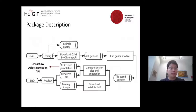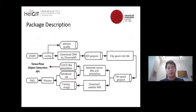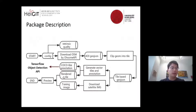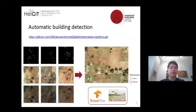Users can define their area of interest by providing a GeoJSON file. OSM2Label then downloads OSM data by querying the OHSOME API, clips OSM geometries into tiles, converts them into tile-based annotations, and downloads the corresponding satellite image. By combining the annotations and satellite image, OSM2Label automatically generates training samples for modern deep learning frameworks. With COCO-like annotations, one can easily train building detection models via the TensorFlow Object Detection API.